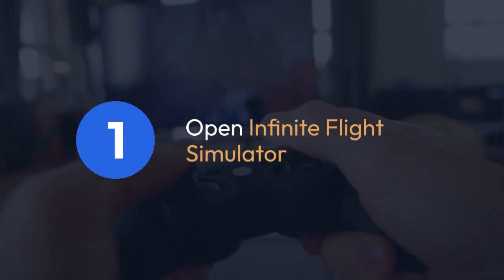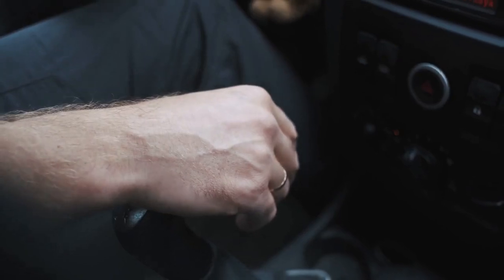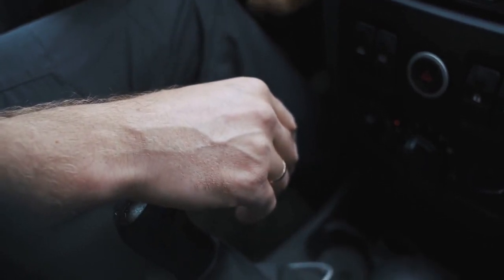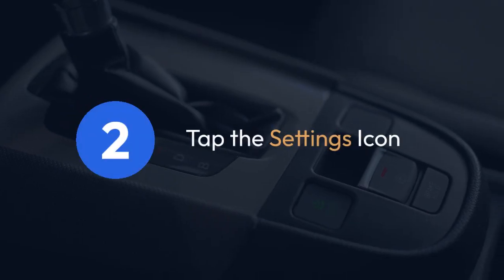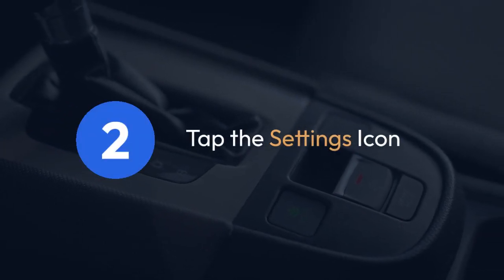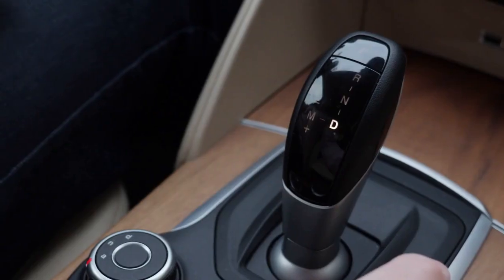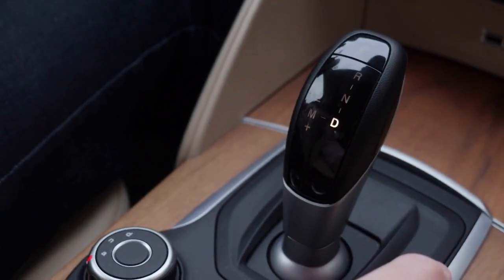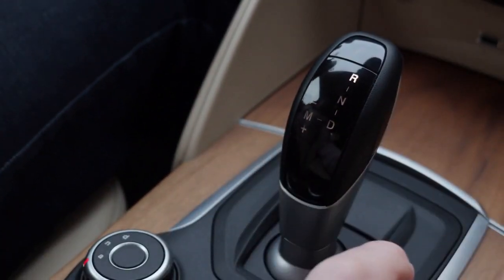Open Infinite Flight Simulator. Once the simulator is loaded and you're on the main menu, tap the Settings icon, often represented by a gear or cogwheel. This icon's location might vary slightly depending on your device and Infinite Flight version, but it's always in the main menu.